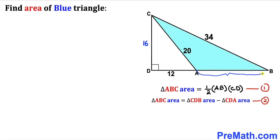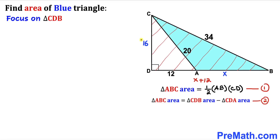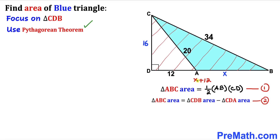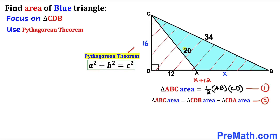Now let's call side length AB as x units. Therefore the whole distance BD is going to be 12 plus x, or x plus 12. Let's focus on the bigger triangle CDB, whose side lengths are 16, 34, and x plus 12. Since we are dealing with a right triangle, we will use the Pythagorean theorem to solve for x. Let me call the longest leg side c, and the other sides a and b.